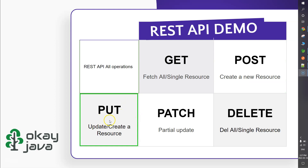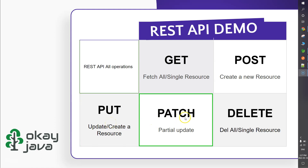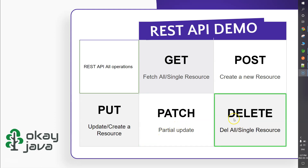We use POST to create a new resource. Then we'll talk about PUT, which is used to update or create a new resource if it does not exist. We'll also cover PATCH, which is used to partially update a resource, and DELETE mapping, which is used to delete a specific resource or all resources from the database.